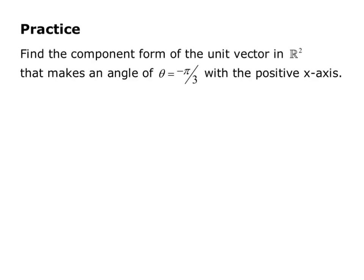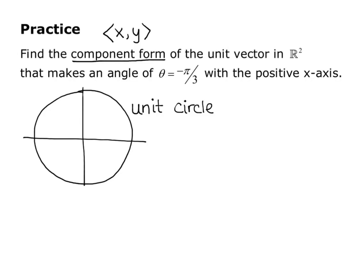Here's a practice problem: find the component form of the unit vector in R2 that makes an angle of theta equals negative pi over 3 with the positive x-axis. The component form would be angle bracket x, y. Thinking back to the unit circle, an angle of negative pi over 3 with the positive x-axis puts us in the fourth quadrant. The x-value of that point is cosine of negative pi over 3, and the y-value is sine of negative pi over 3.